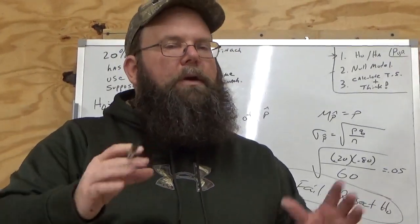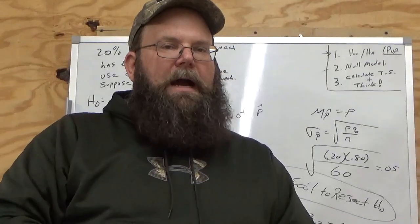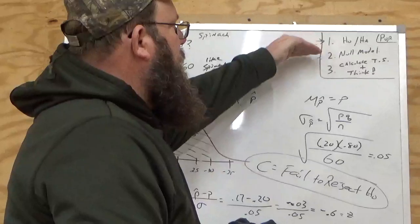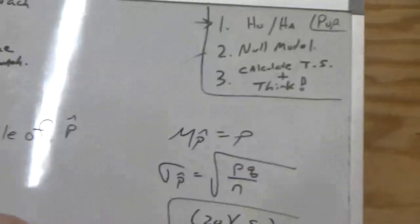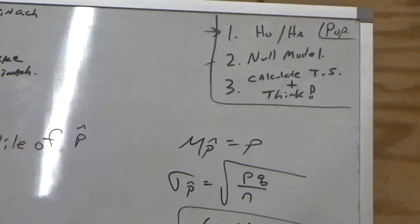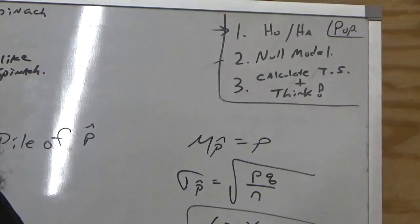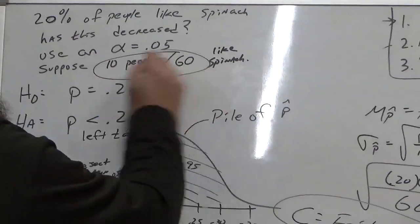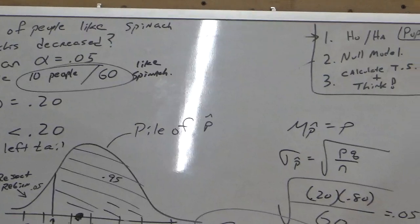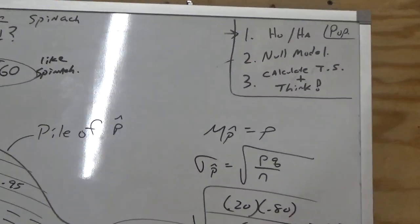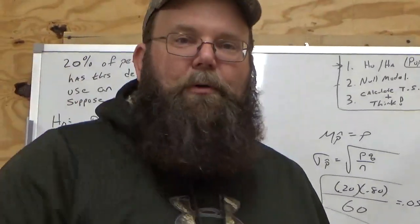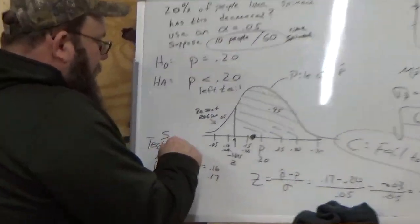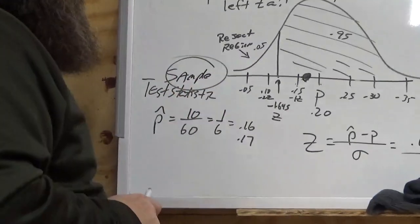It's very simple. Once you get the hang of it, I know that it could be like overload on you. Just follow the steps. The Ho-Ha comes from the population. The null model. Assume the null is true. That's also a population. The only time you go to the sample stuff, and what's the sample right here? 10 people out of 60. The only time you go to the sample is when you calculate the test statistic. And how do you know you go to the sample? Because statistic tells you it comes from the sample. The language is important. It tells you. Test statistic. That means sample.